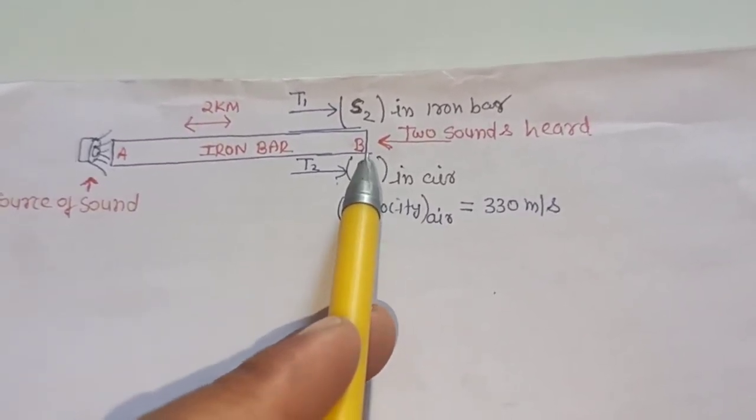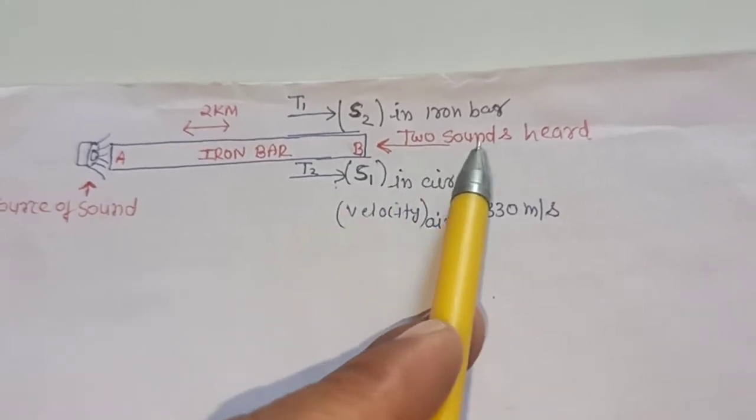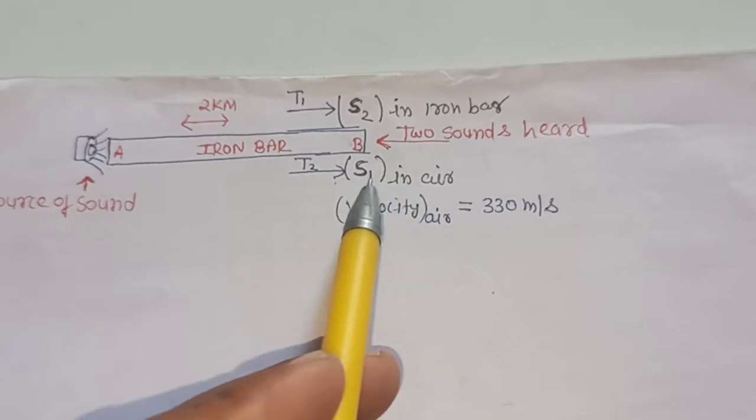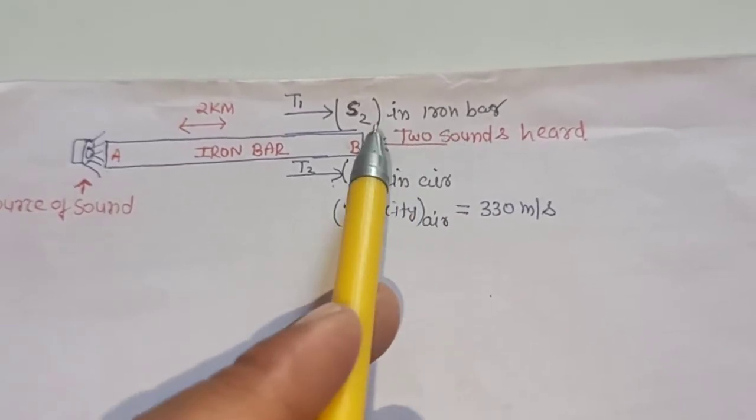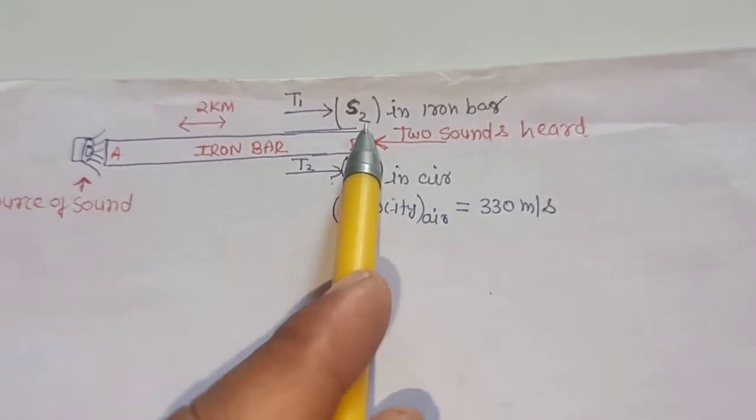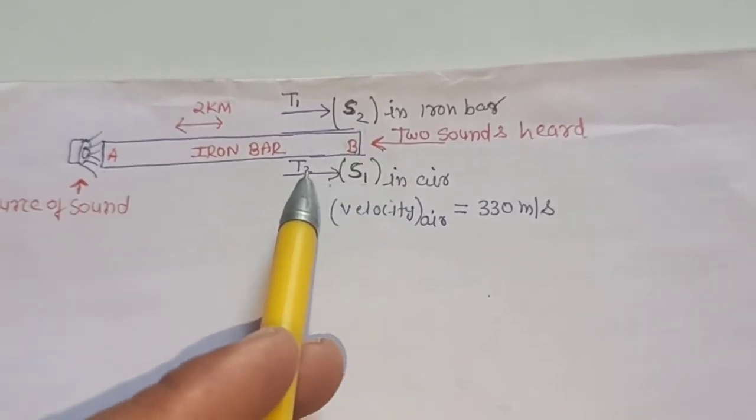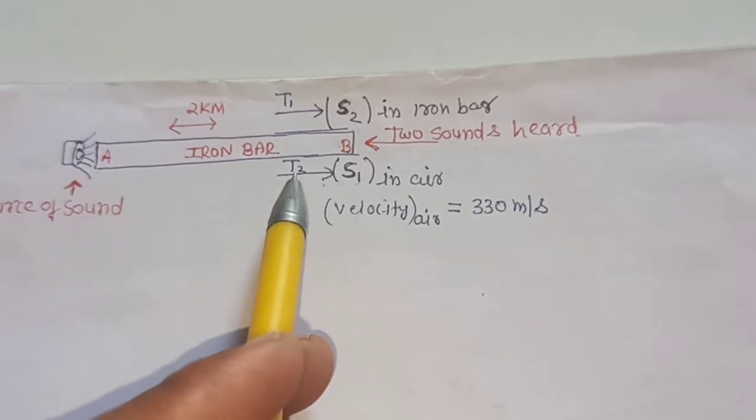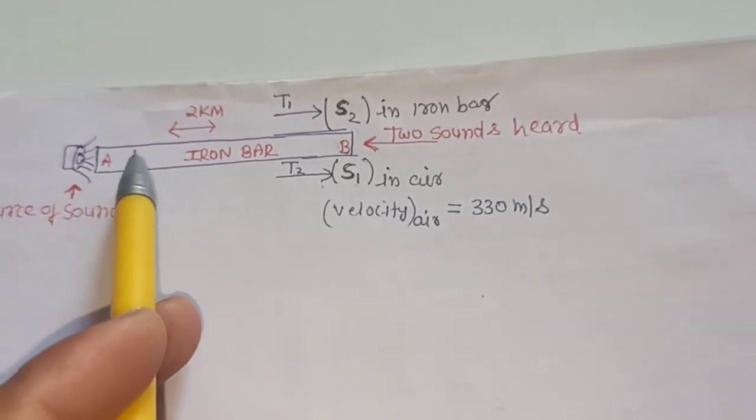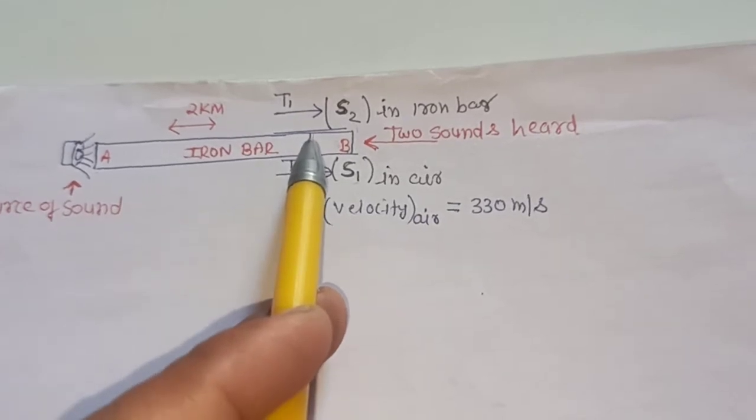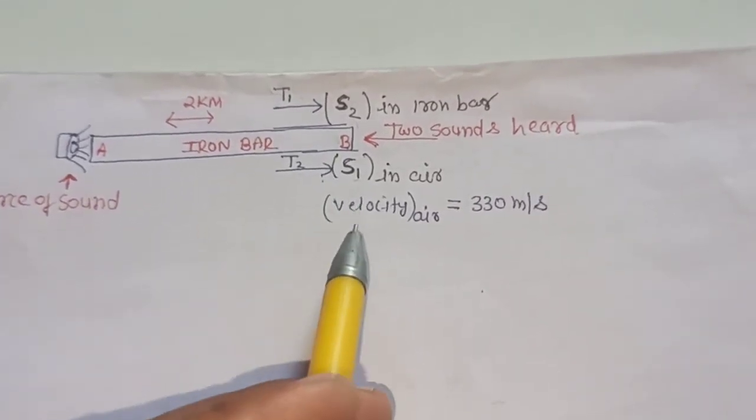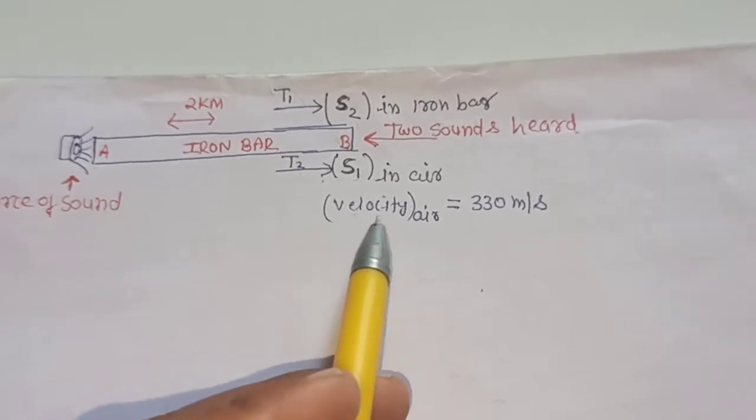At point B, two sounds are heard. First sound heard by the air and second sound heard by the iron bar. S1 for air and S2 for the iron bar. Time taken to travel the sound in air we consider T2, and time travel of sound in the iron bar we consider as T1. And the speed of sound in the air is given.